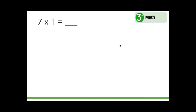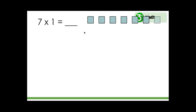Our first problem says seven times one. So seven times one is seven ones — five, six, seven. Seven times one equals seven.